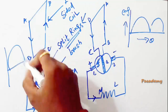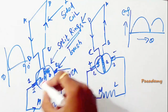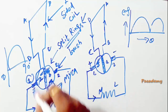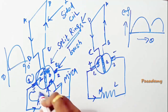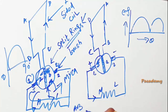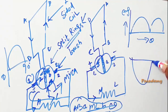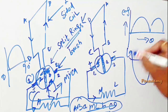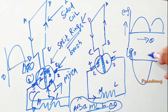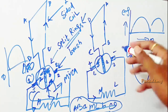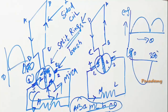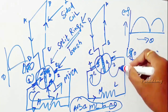During the positive half cycle of rotation, from 0 to 90 degrees, segment A will be in contact with brush number 1. The flow of current in the circuit will be from A to B, then from segment A to M, L, and then from segment B to C, D. As the coil moves from 90 to 180 to 360 degrees, segments B and A change their positions, so segment B is now in contact with brush A and segment A is in contact with brush number 2.